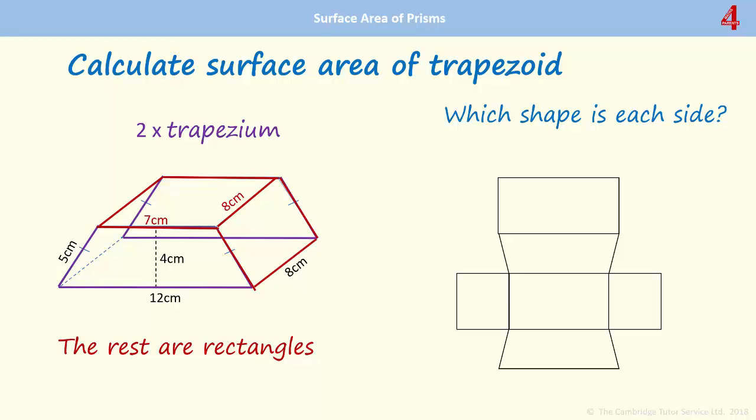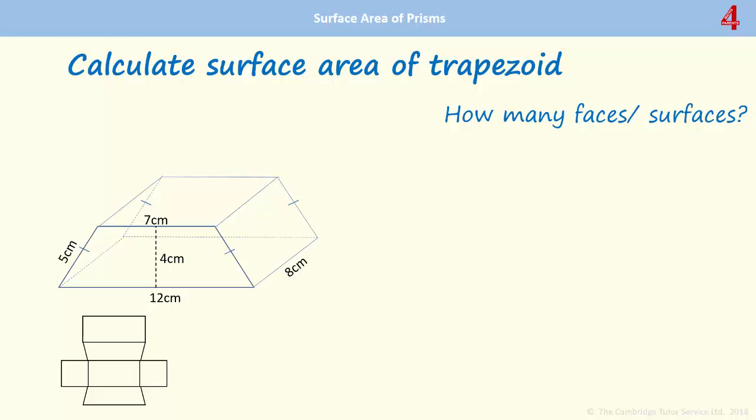Working out the area of each of the faces of this shape: we have the base which is 12 times 8, then we have the top—and remember this one—it's 7 times 8. Then we have the rectangles at the side, so there's the one at the right which is 8, and it's the same as the one on the other side, so the height will be 5 centimeters, so that's 5 times 8.